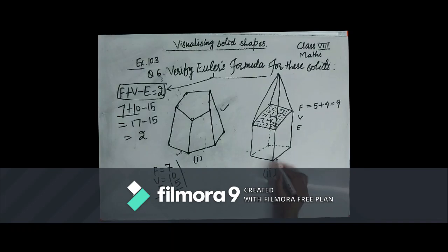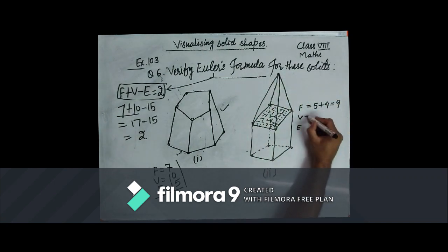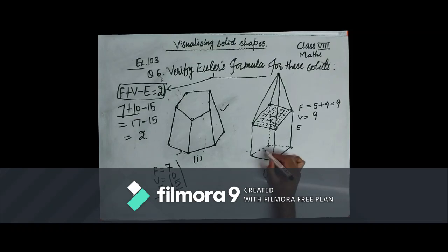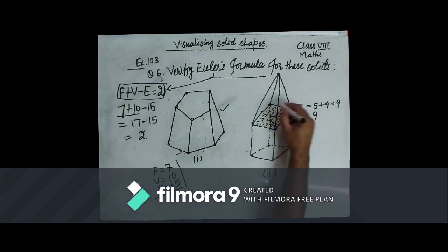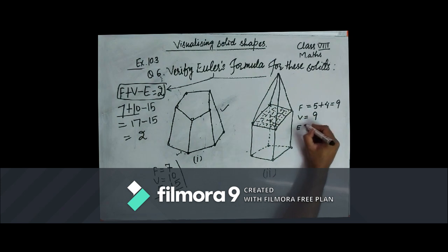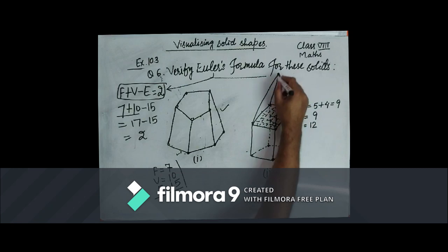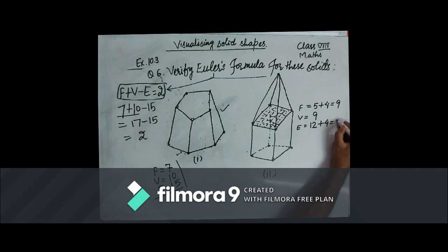Let us count the number of vertices: 4 at the bottom, 4 at the middle, and 1 at the top, which counts to 9 vertices. The number of edges: 4 at the bottom, 4 lateral edges, 4 at the middle — that is 4 plus 4 plus 4 equals 12 edges — and 4 more edges for the triangles. So the number of edges is 16.